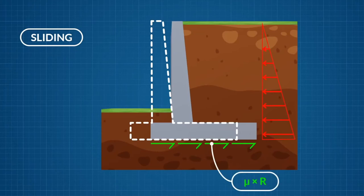The frictional force is given by mu times R. Where mu is the friction coefficient between soil and concrete and R is the resultant soil pressure.